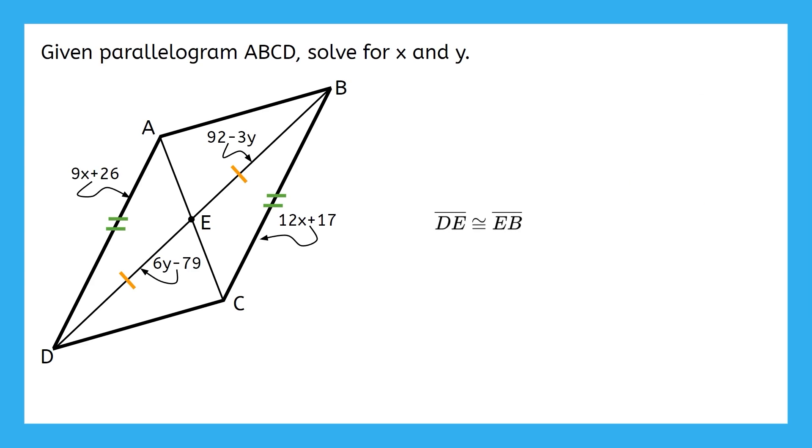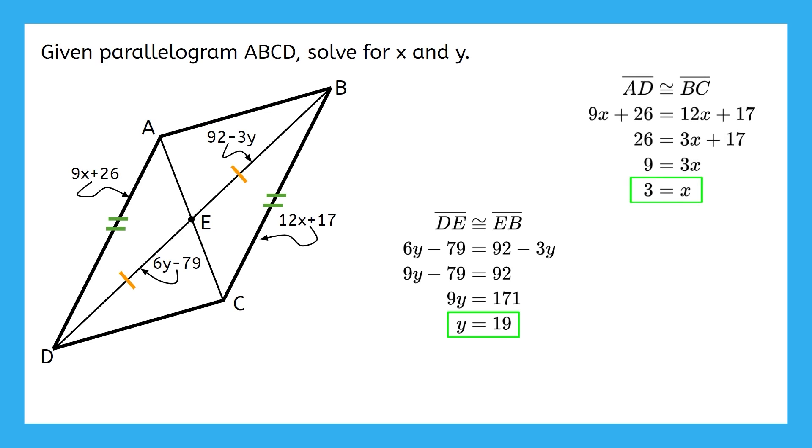For segments DE and EB, we can do the same thing. Since they are congruent, their lengths are equal. This means we can write 6Y minus 79 equals 92 minus 3Y. From here, we just need to solve for Y. I added 3Y to both sides to get 9Y minus 79 equals 92. Then I added 79 to both sides to get 9Y equals 171. Finally, I divided both sides by 9 to get Y equals 19. This is the other half of our final answer. And we have now successfully solved for both X and Y, so we're done.